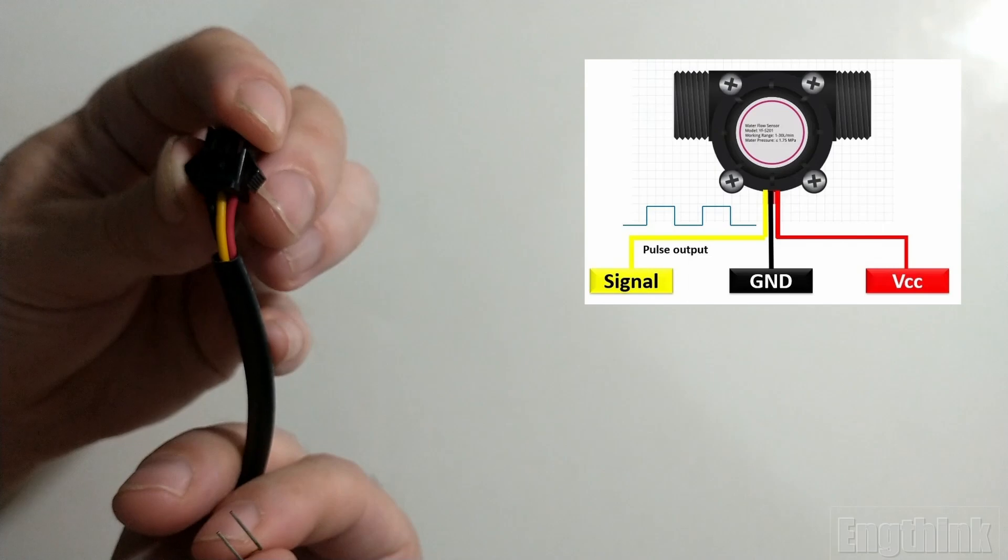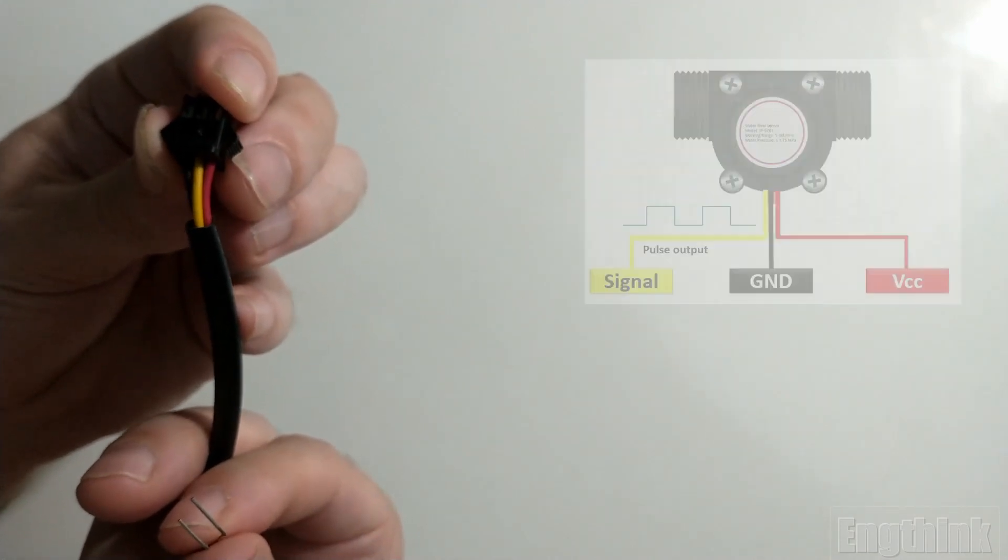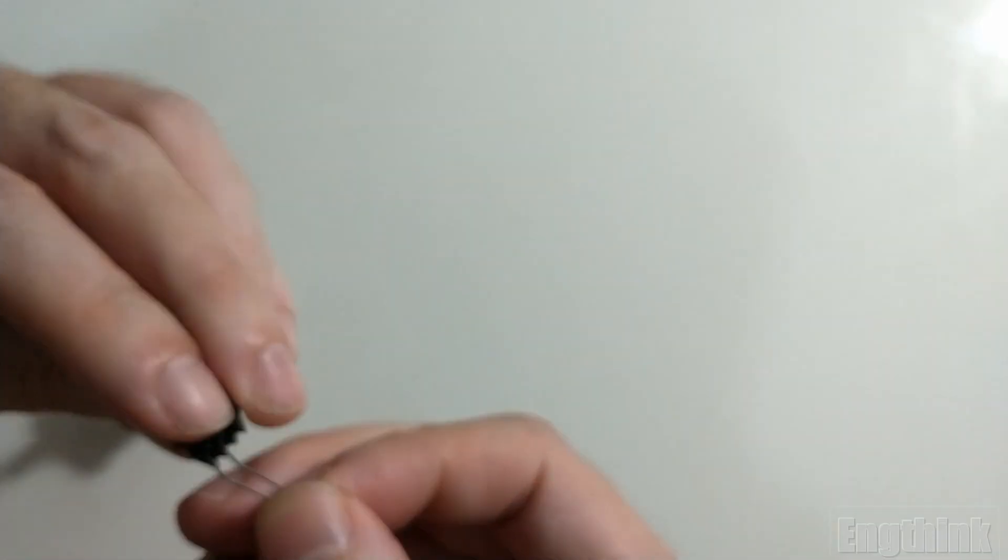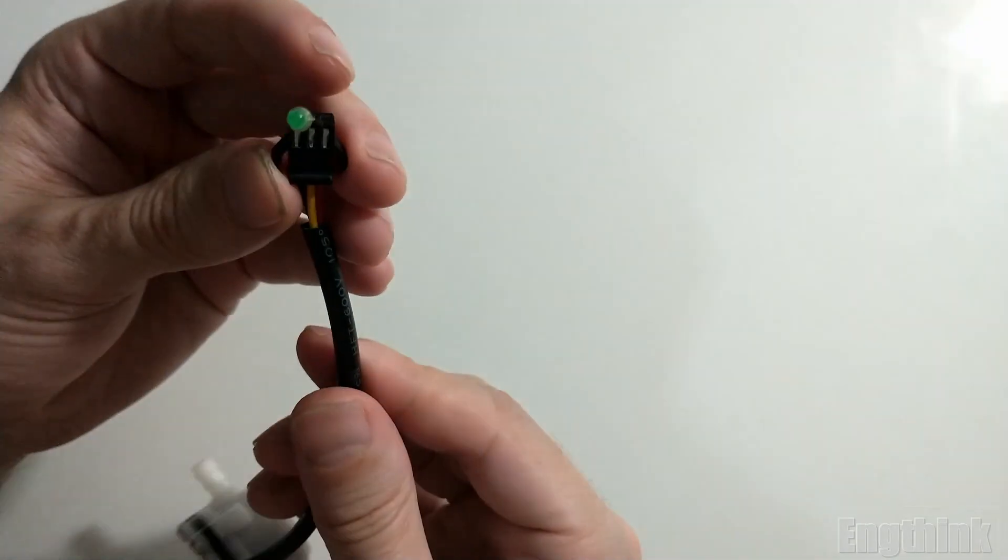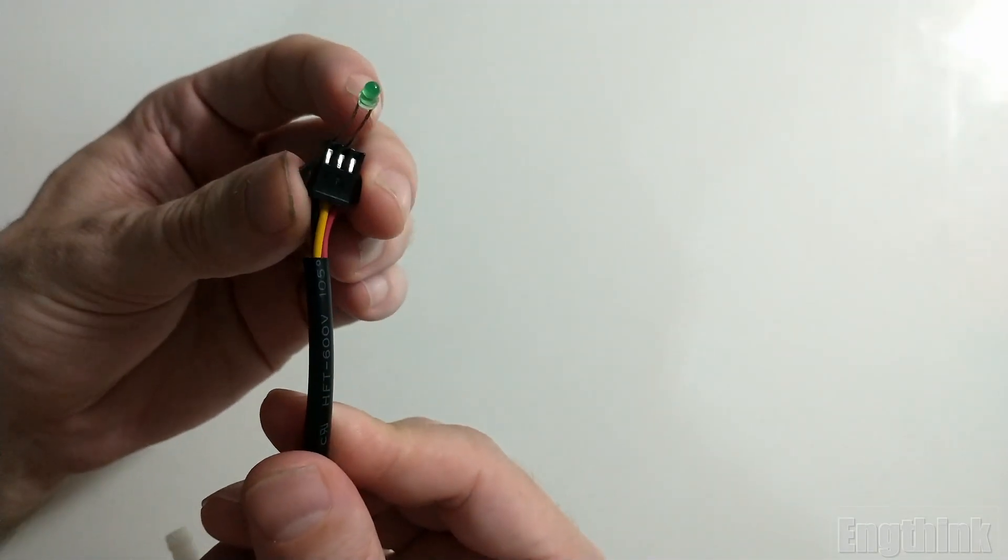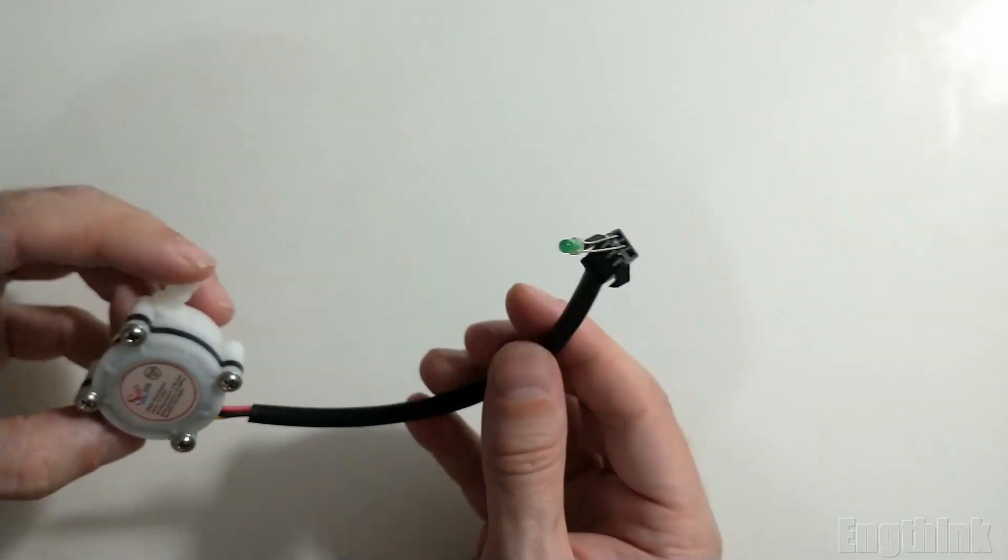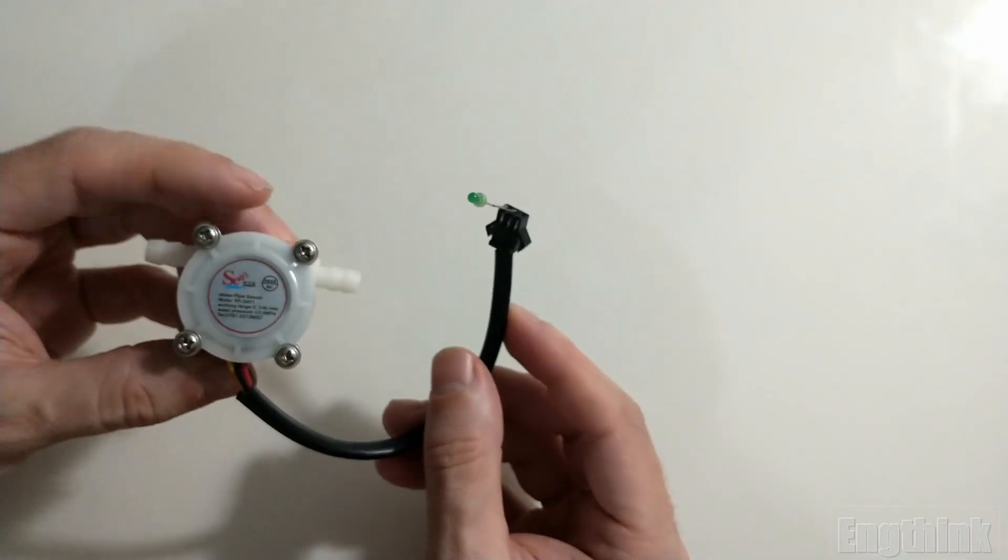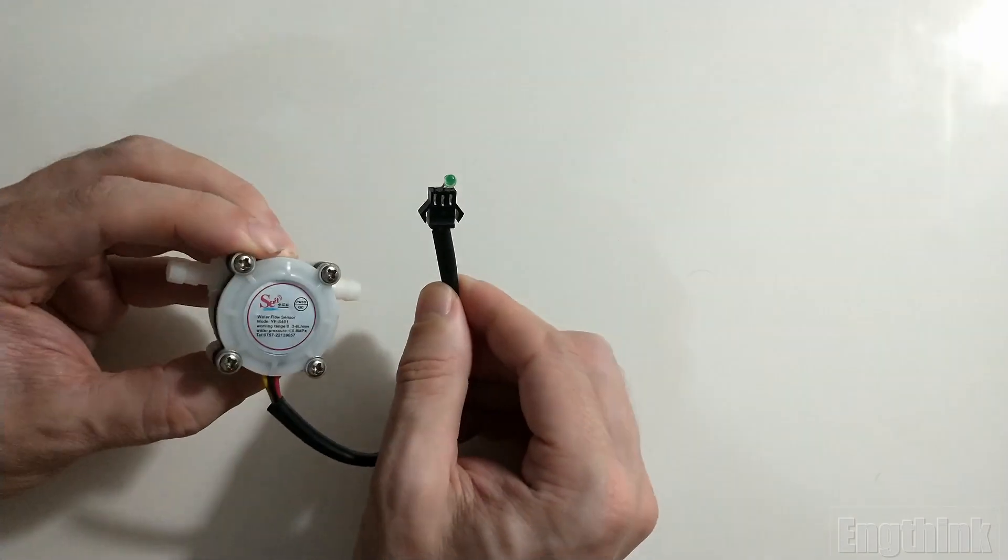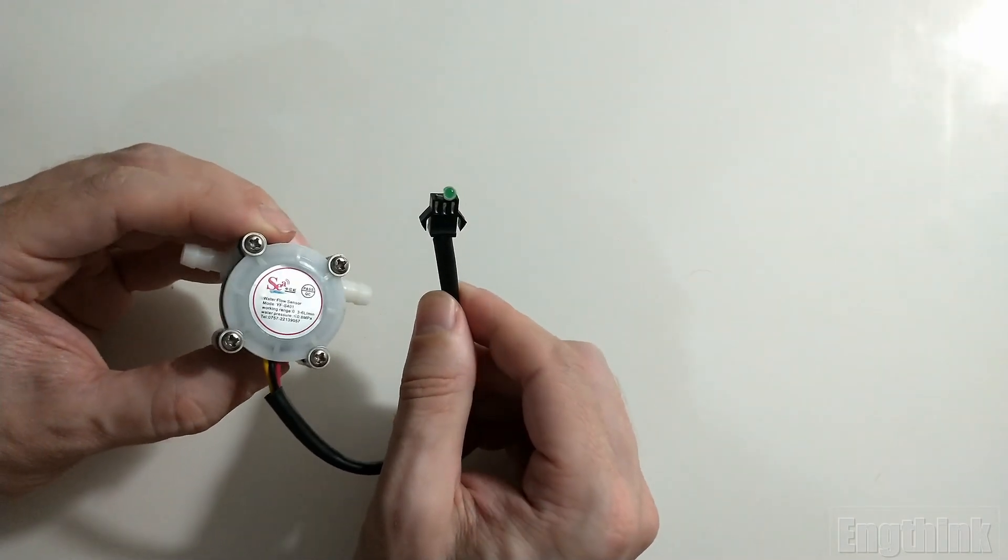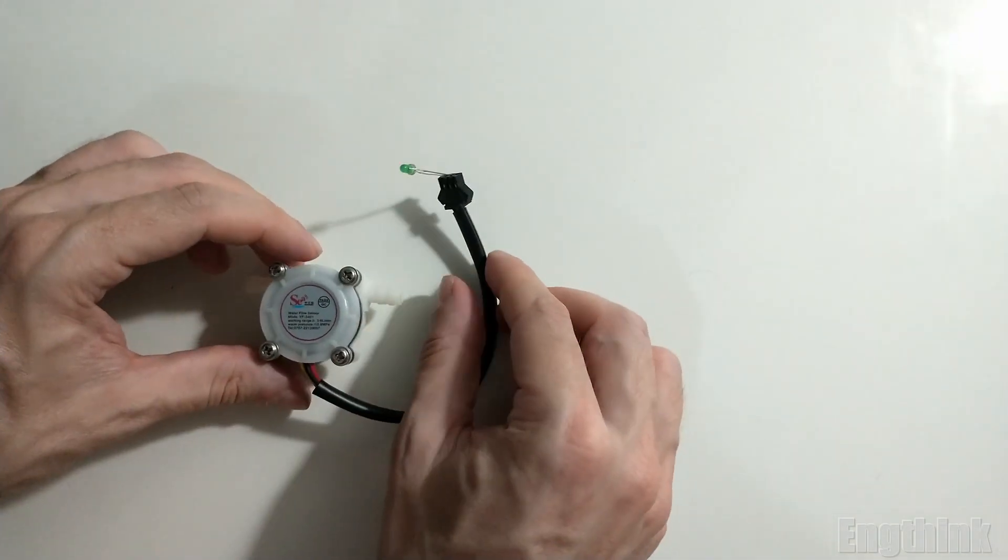To connect the LED, we just need to put the positive and negative of the LED between the yellow wire and the black wire in the connector. Now with the LED connected, we have our lighting signalization. When pulses are generated by the flow sensor, it will be possible to see the LED blinking.